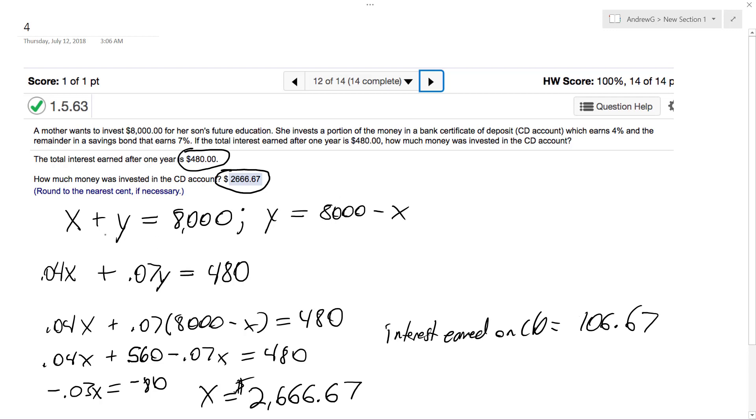And if you want to find, even though this isn't what they're asking for, if you want to find how much was deposited in the savings bond, you just subtract $8,000 by your CD, and then you would get savings bond, or Y is equal to $5,333.33.